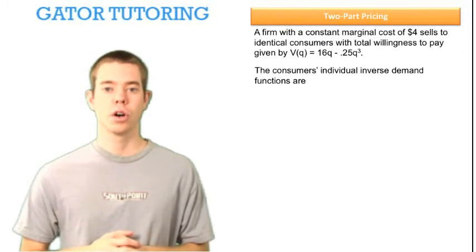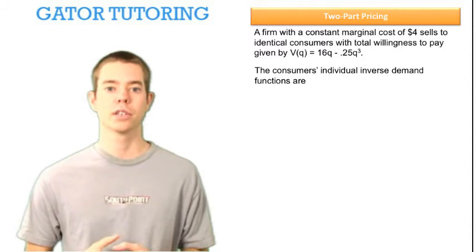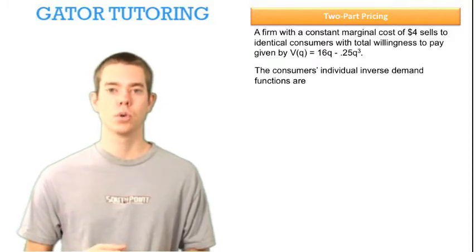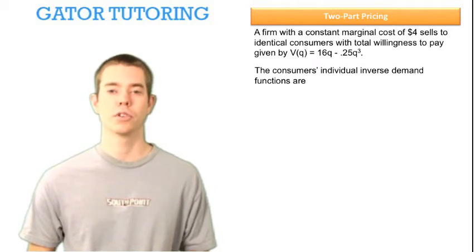A firm with a constant marginal cost of $4 sells to identical consumers that all have total willingness to pay given by total value equals 16q minus .25q cubed. The consumer's individual inverse demand functions are blank, so we need to solve for the individual inverse demand functions.